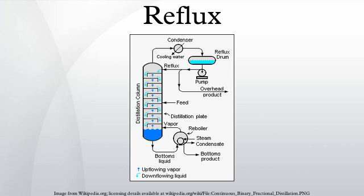Reflux in laboratory distillation. The apparatus shown in the diagram represents a batch distillation as opposed to a continuous distillation. The liquid feed mixture to be distilled is placed into the round bottomed flask along with a few anti-bumping granules, and the fractionating column is fitted into the top. As the mixture is heated and boils, vapor rises up the column. The vapor condenses on the glass platforms inside the column and runs back down into the liquid below, thereby refluxing the upflowing distillate vapor.